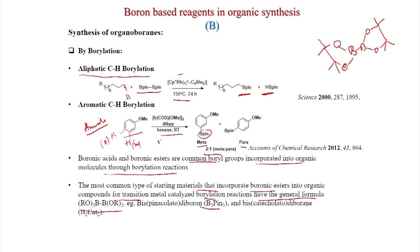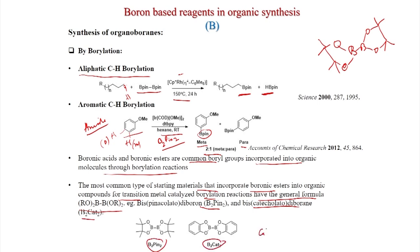Boronic esters are the common boryl groups incorporated into organic molecules through borylation reactions. The most common starting materials for transition metal-catalyzed borylation reactions have the general formula R-B(OR)2, i.e., bis(pinacolato)diborane B2pin2 and bis(catecholato)diborane B2cat2. Here 'pin' means pinacol and 'cat' means catechol. These are the useful reagents used in transition metal-catalyzed C-H borylation reactions.